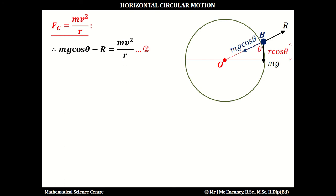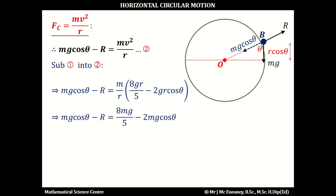We substitute equation 1 into equation 2, replacing V squared with 8gR over 5 minus 2gR cos theta. This gives Mg cos theta minus R equals 8mg over 5 minus 2mg cos theta.